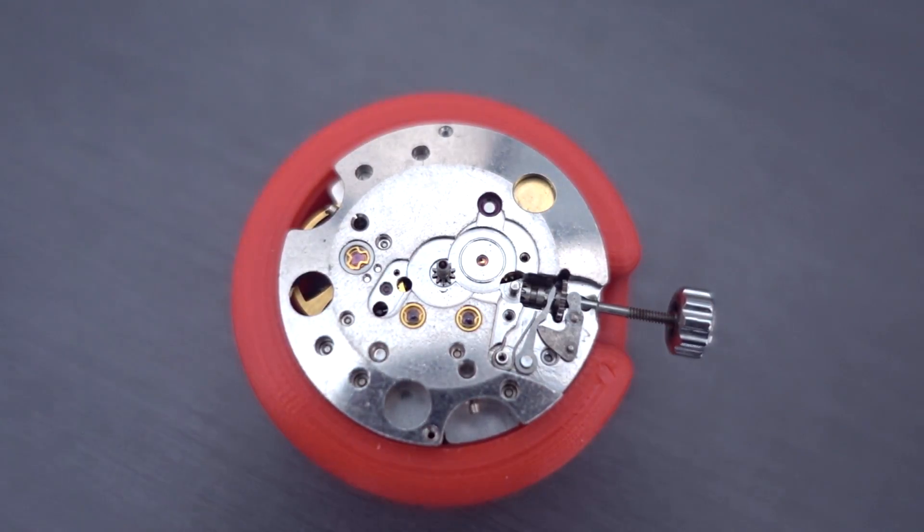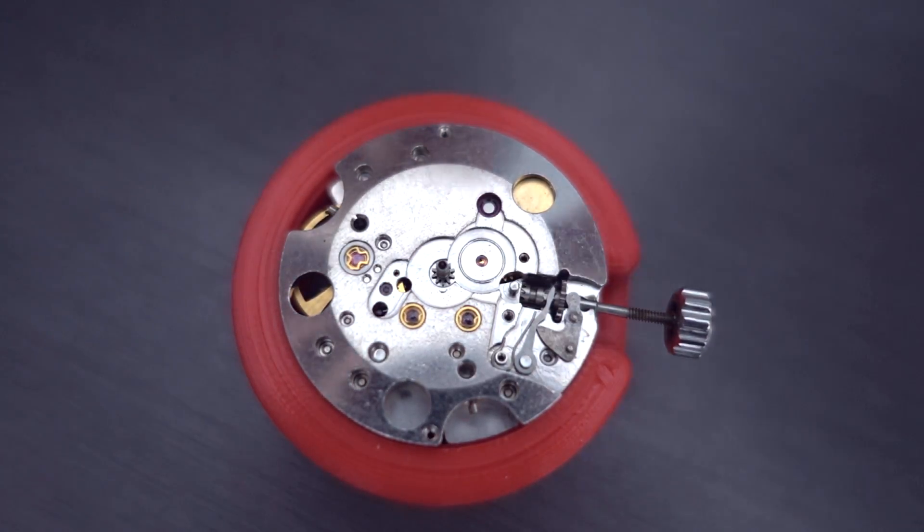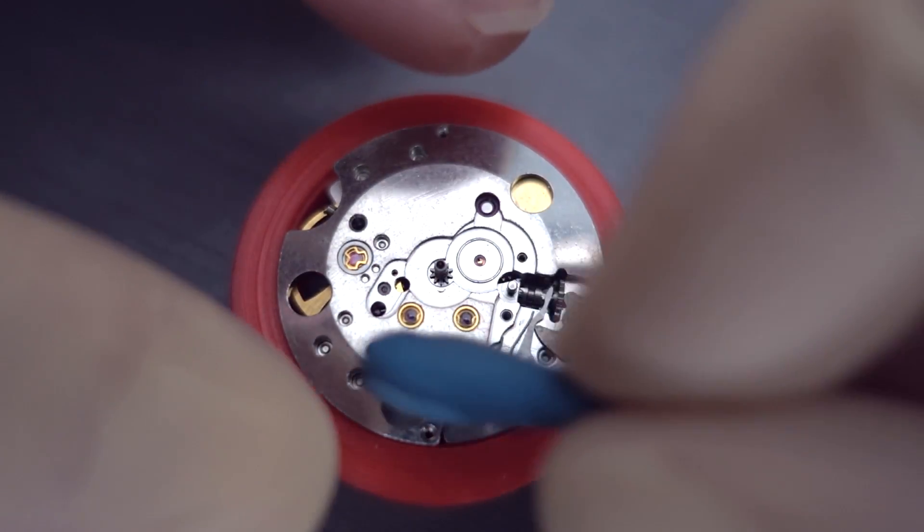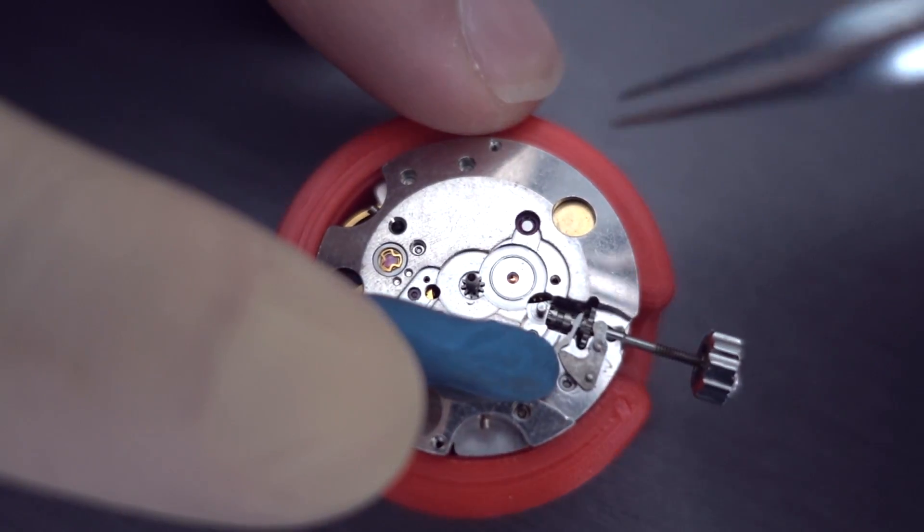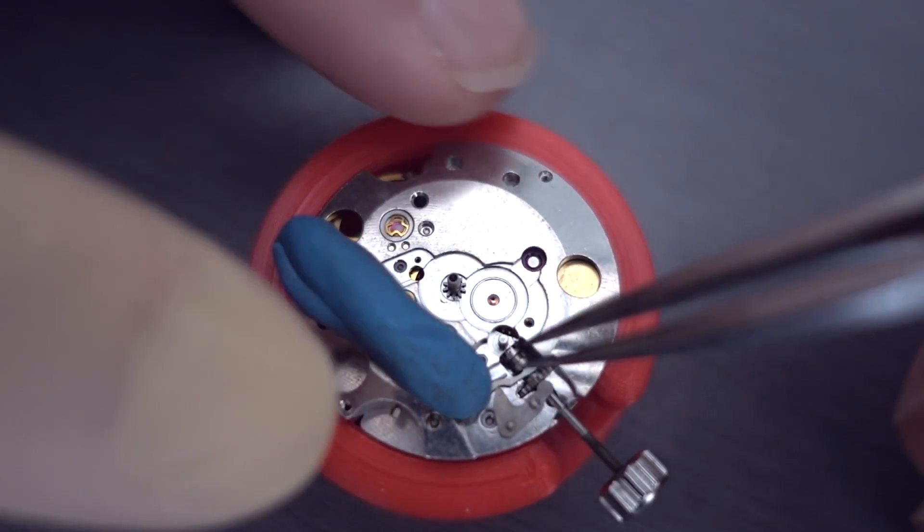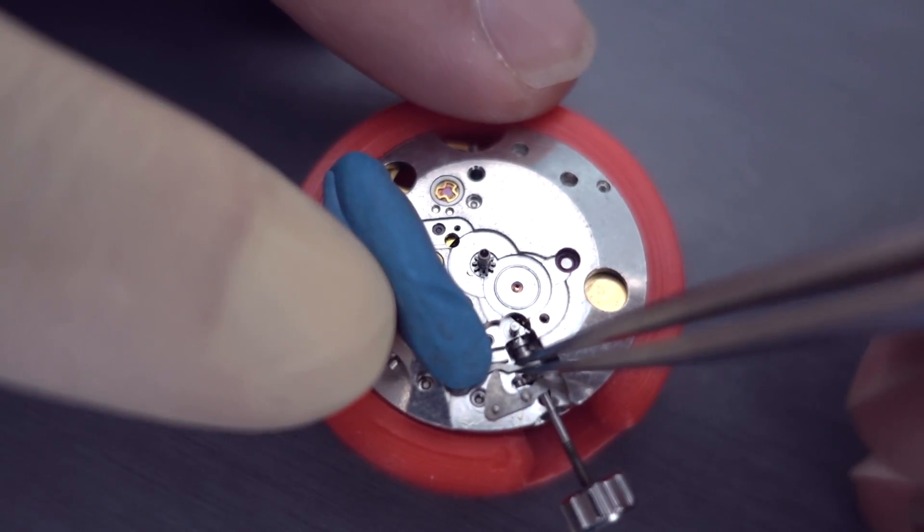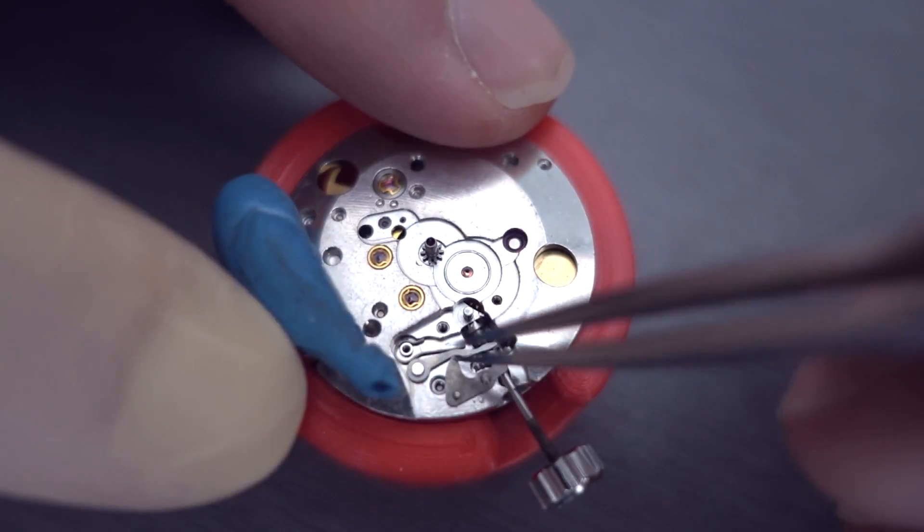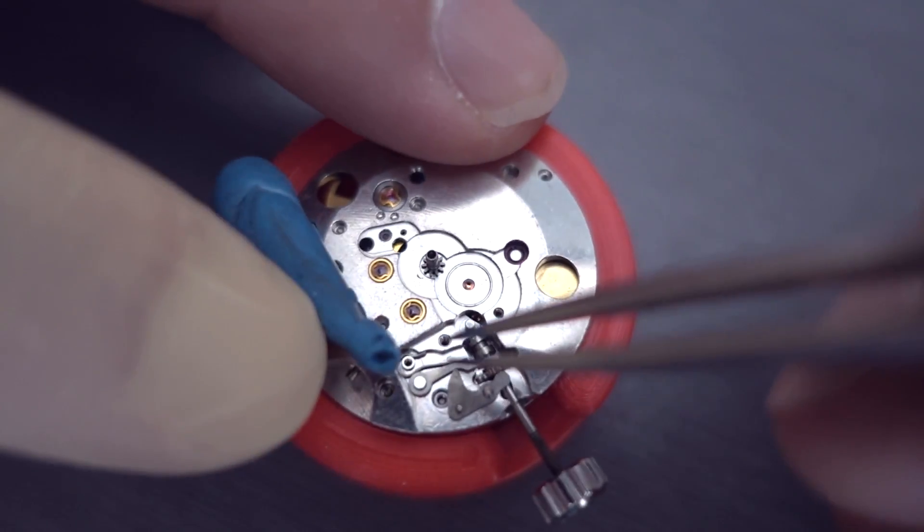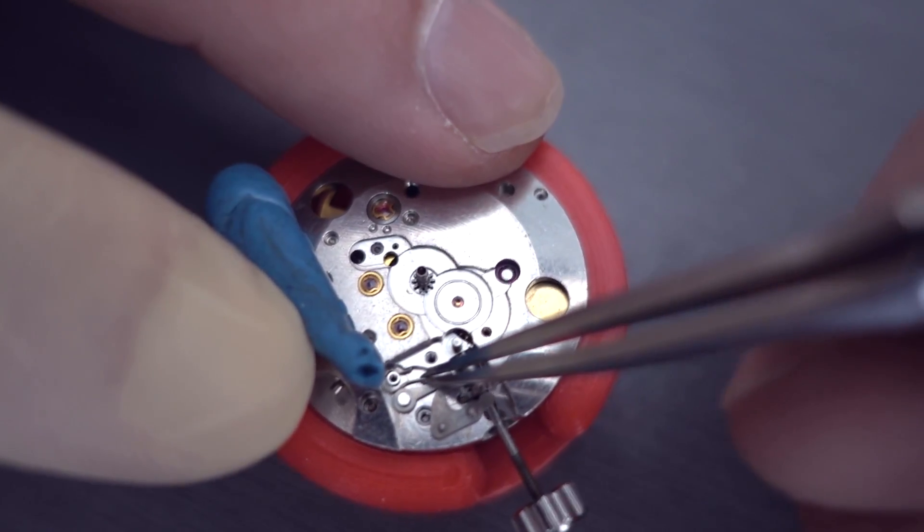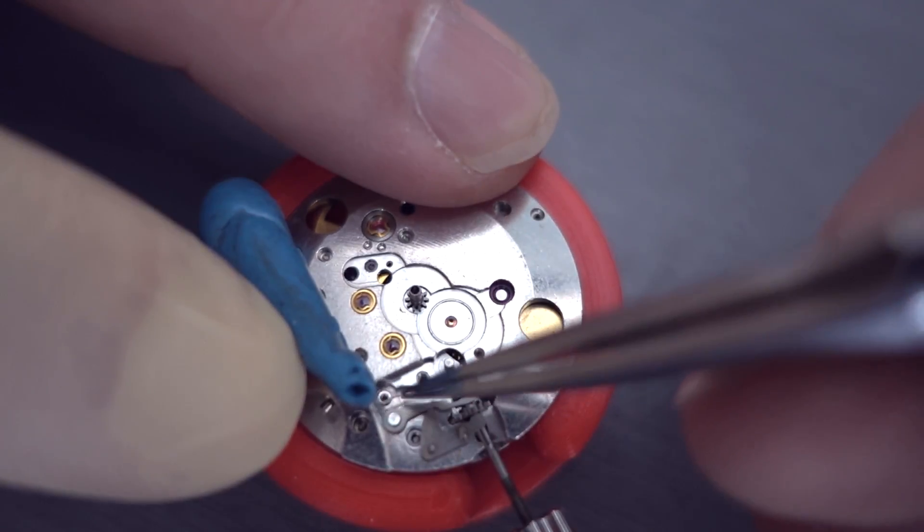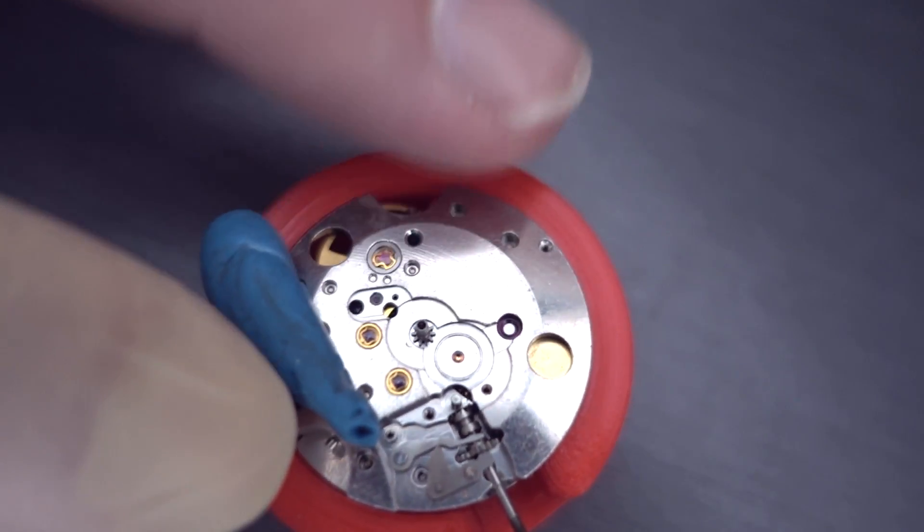And you'll see we've got one of those shepherd crook springs there which holds the yoke on or springs to the yoke. What I'm going to do is I'm just going to put some Rodico over the top while I remove it, so if it decides to ping it really hasn't got far to go. A little bit fiddly doing this at an angle. There we go. And we've removed that.